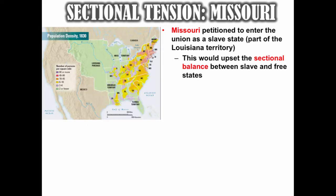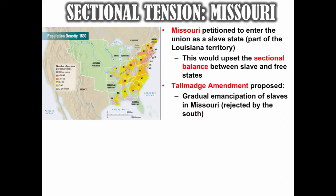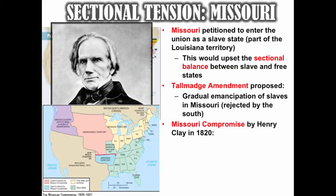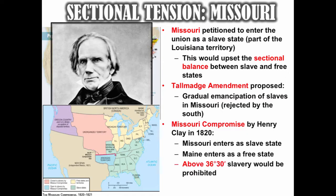The reason there was opposition in the North is because this would upset the sectional balance between slave and free states. At the time, there were 11 slave states and 11 free states with equal power in Congress. Some Northerners proposed the Talmadge Amendment, which would allow for the gradual emancipation of slaves in Missouri — it was overwhelmingly rejected by the South. The situation was finally resolved by the Missouri Compromise. Missouri entered as a slave state, Maine entered as a free state, and above the 36°30' line, slavery would be prohibited.